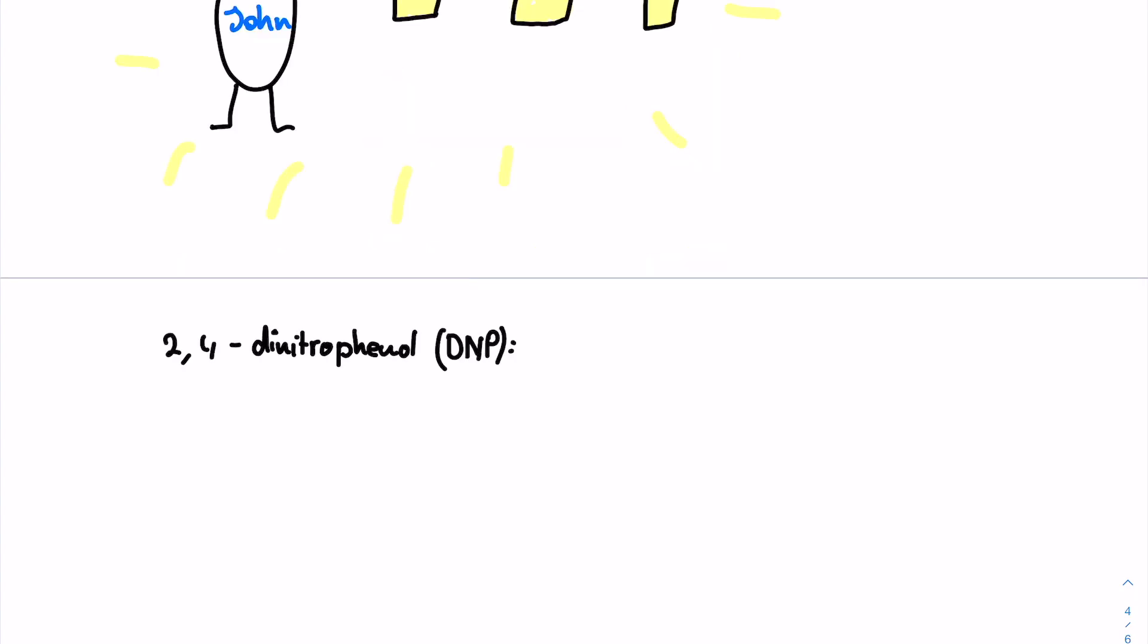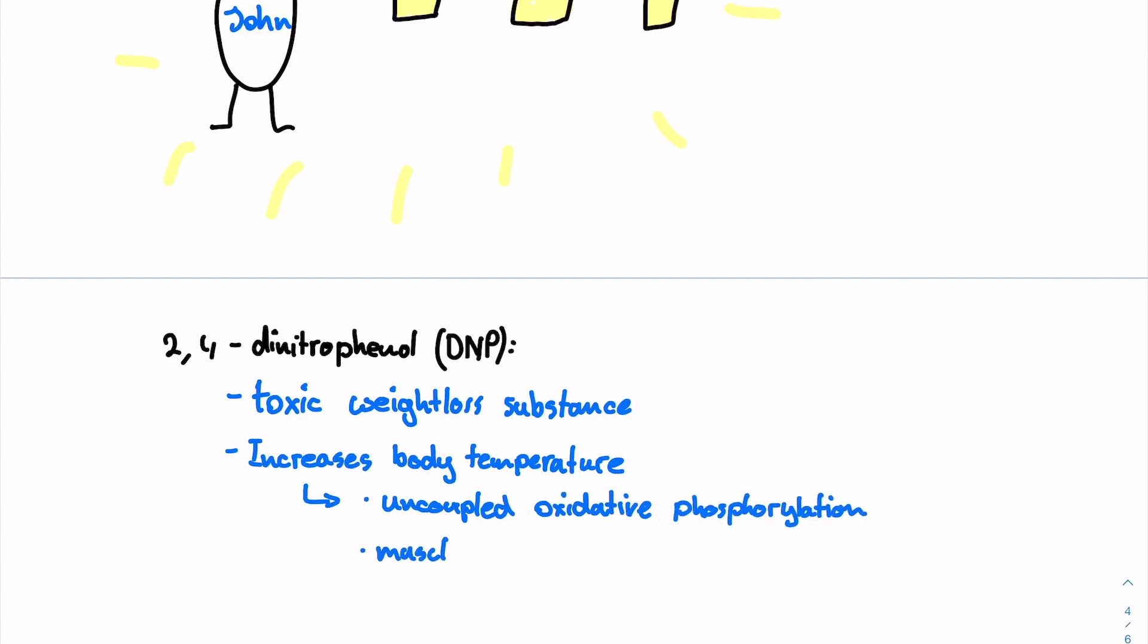So, to summarize, DNP is an acutely toxic weight loss substance. It uncouples oxidative phosphorylation, bypassing the ATP synthase, and increases calcium, which both drive the heat up. As a result, people can experience fatal hyperthermia. Luckily for John, he survived never to take DNP again.